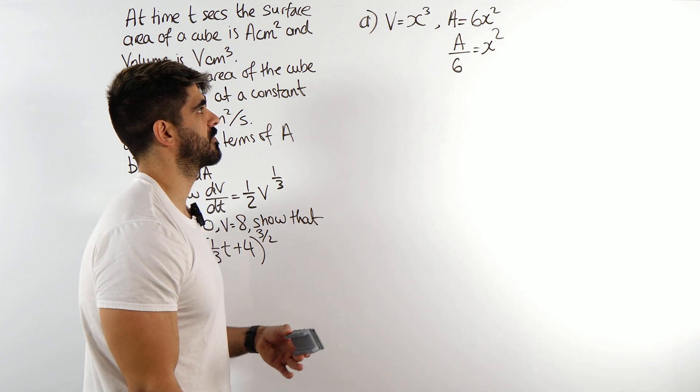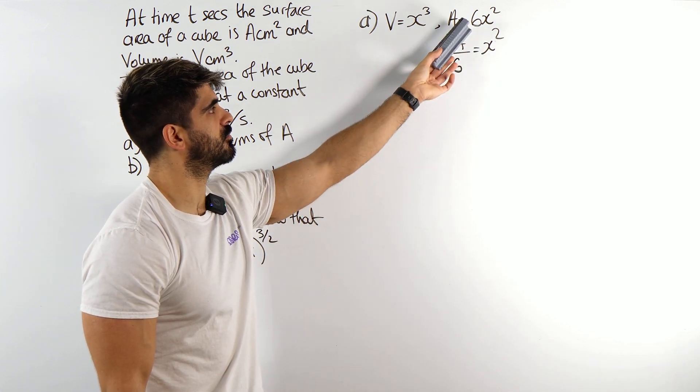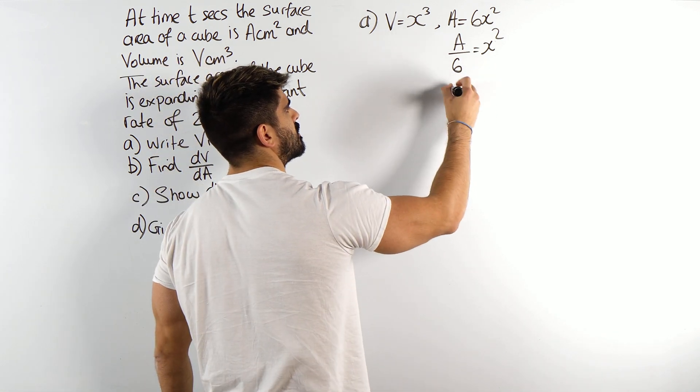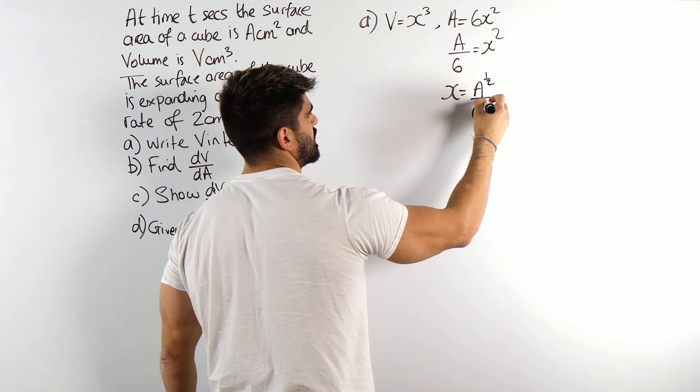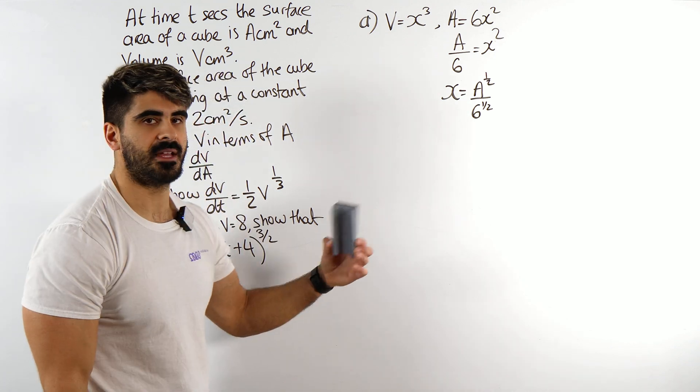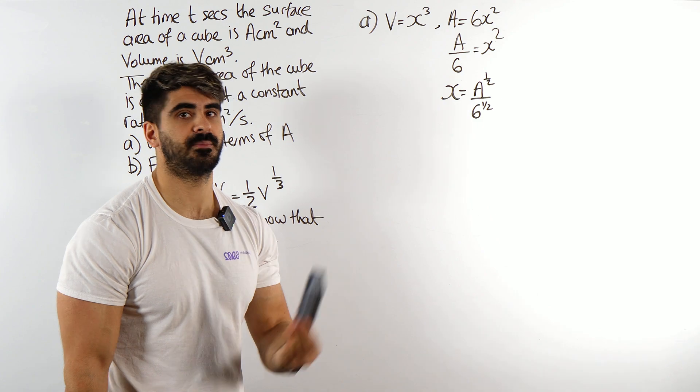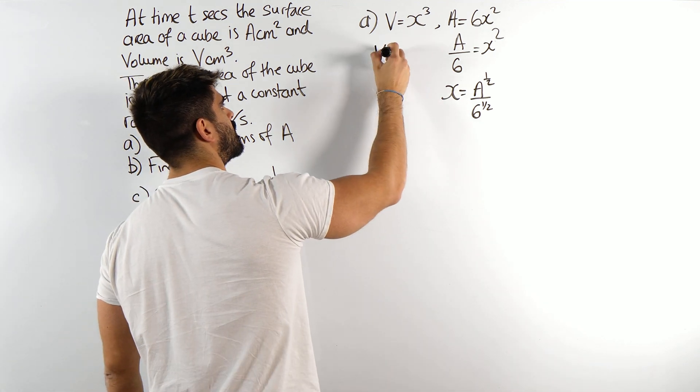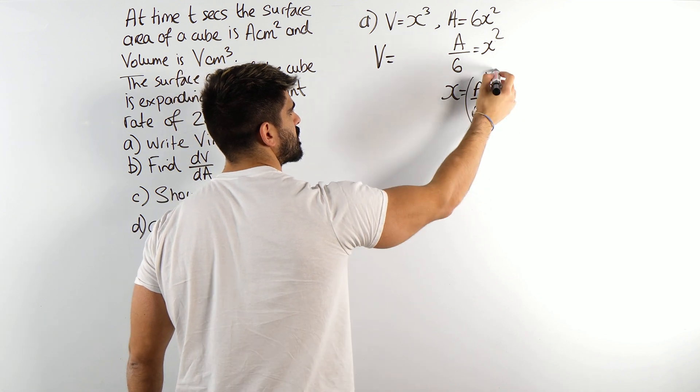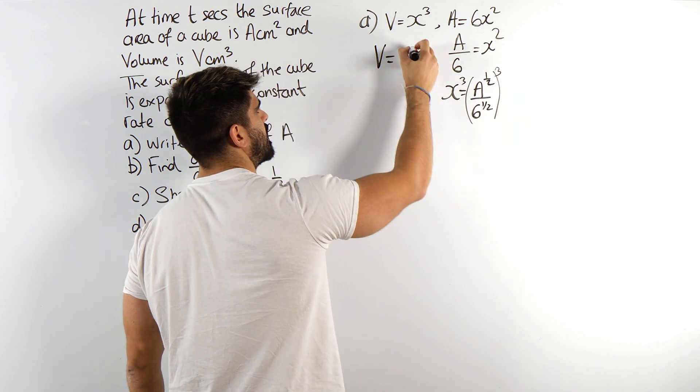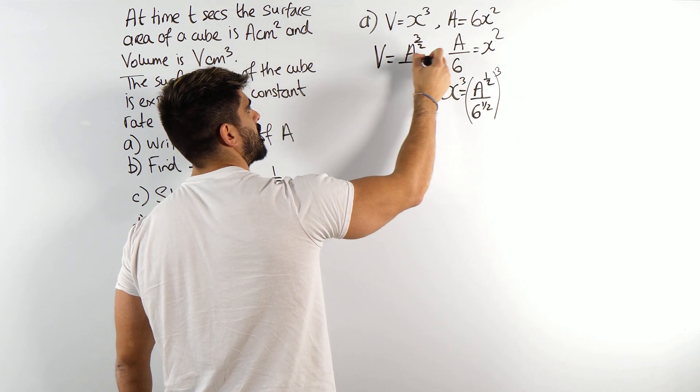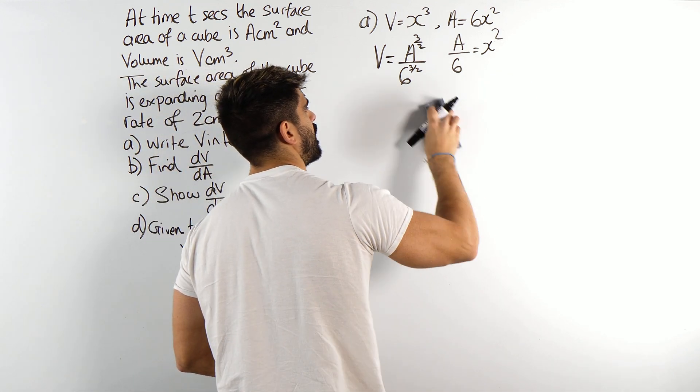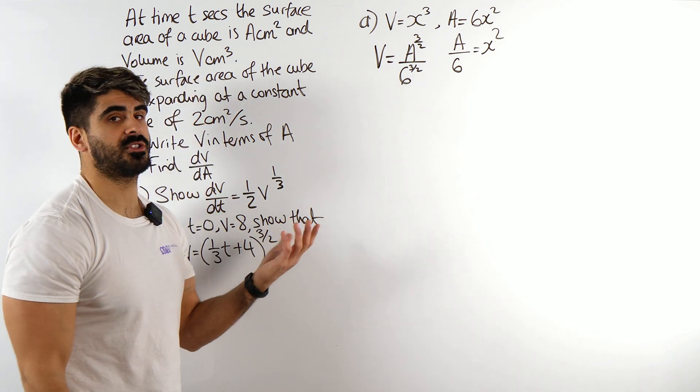So how from there do we eliminate x? Well, what do they want? Write V in terms of A. So they want you to rewrite V not in terms of x but in terms of A. So here I'm going to rearrange x in terms of A. So I'm going to divide by 6, I get A over 6 is x to the power of 2. I'm going to root both sides. Now how you represent this is totally up to you, but there's definitely a nicer way of doing this. So I'm going to write, I'm not going to write even root A over root 6, I'm actually going to write this in terms of powers. So x is A to the power of a half divided by 6 to the power of a half.